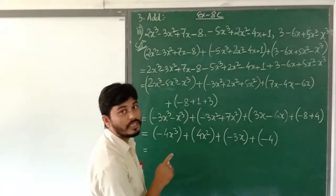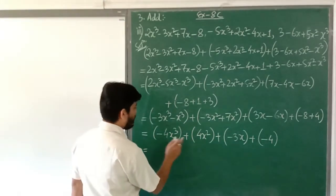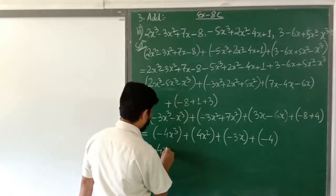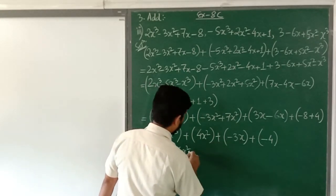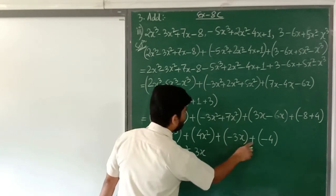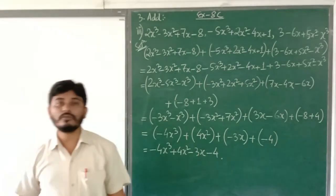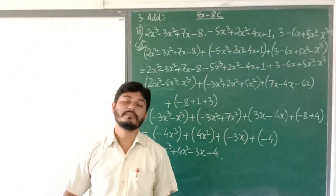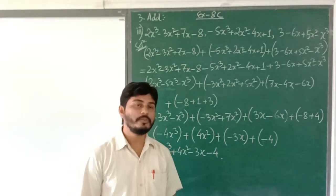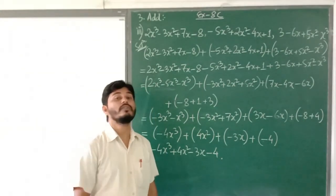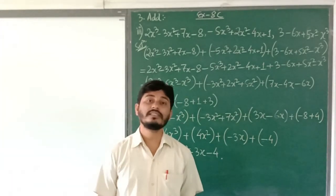We used the concept of sign operation from integers. Removing the bracket: minus 4x³ plus 4x² — plus into minus is minus 3x — and minus 4. So this is how we add two or more expressions in algebraic expressions. I hope it is clear. If you have any doubt or confusion you can ask me. That's all from this class.